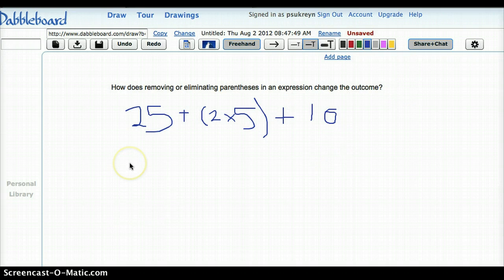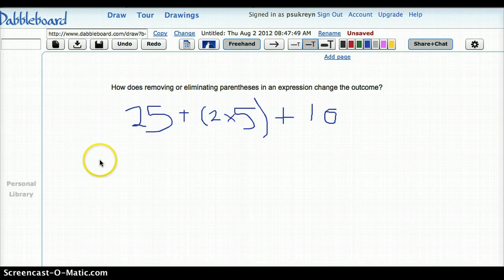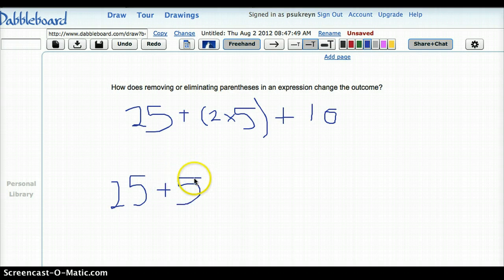Okay, let's do another one that has similar numbers but the parentheses are in a different place and then we're going to solve them and see how they compare. So let's do 25 plus five plus in parentheses two times ten.